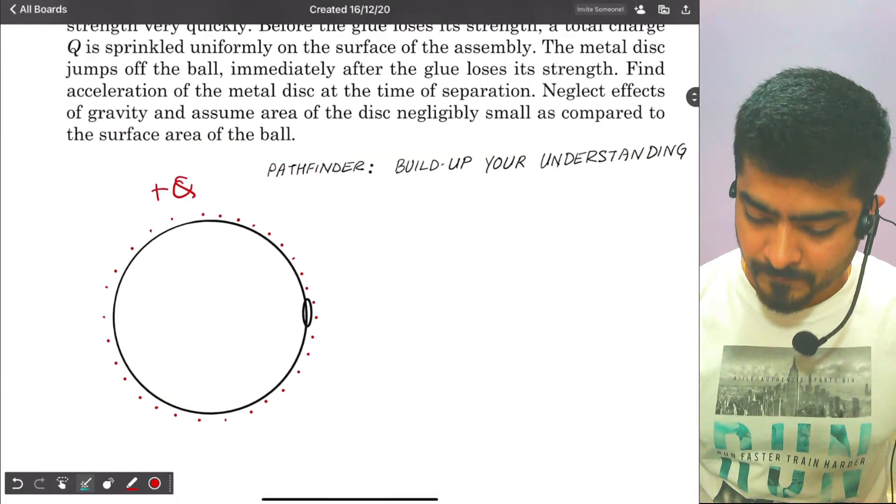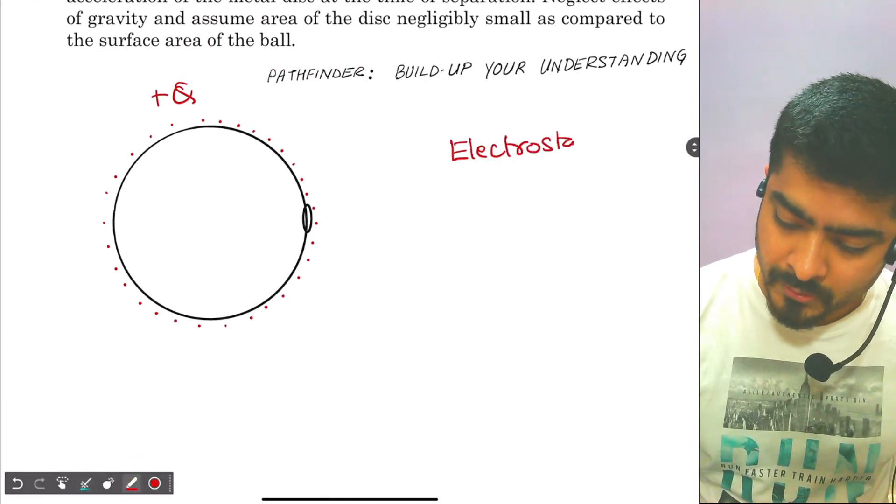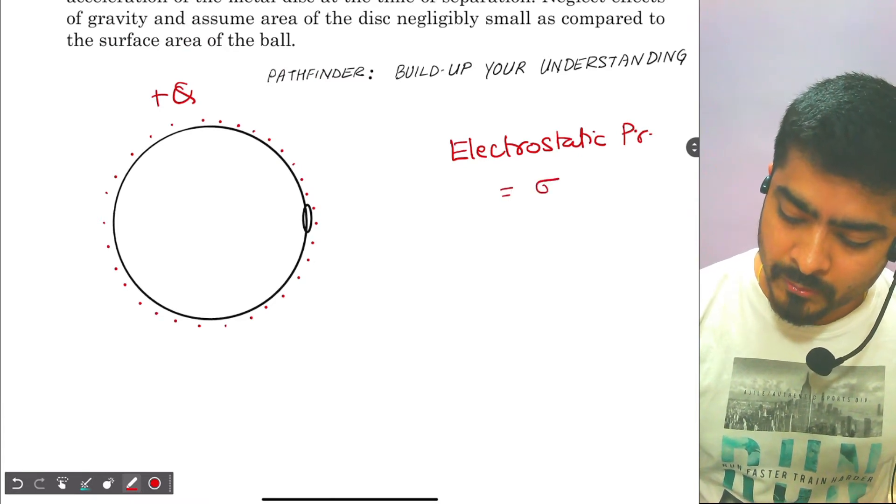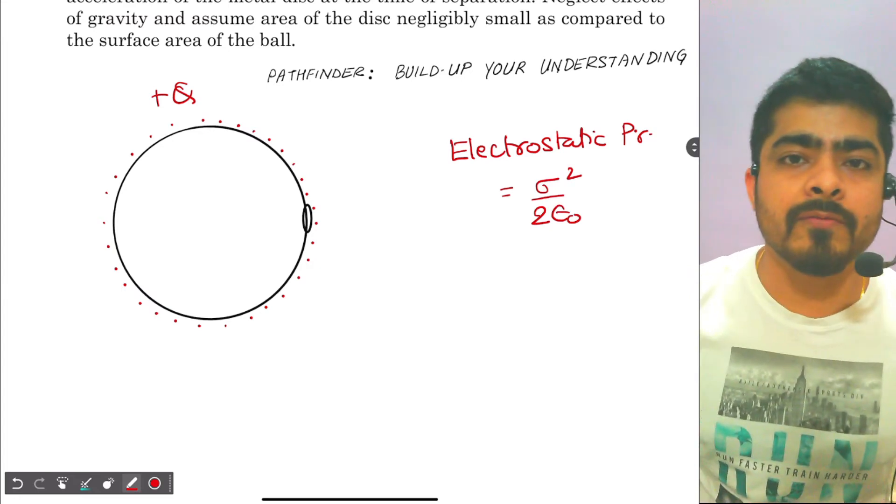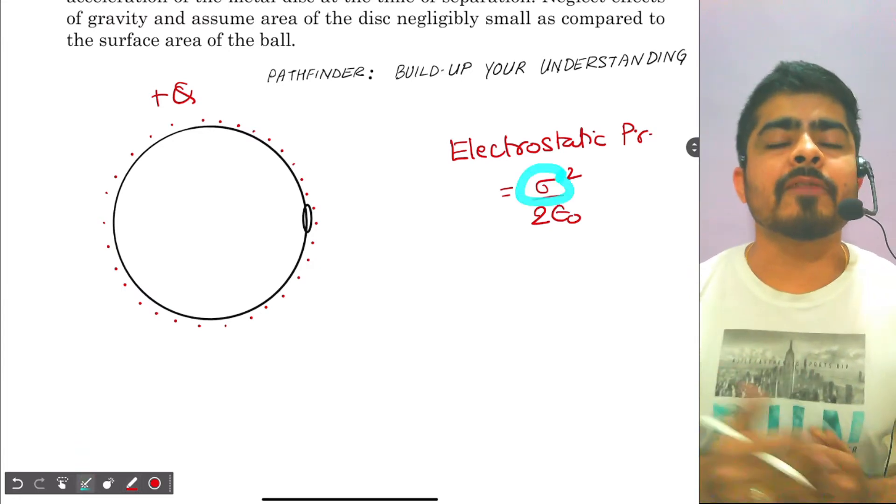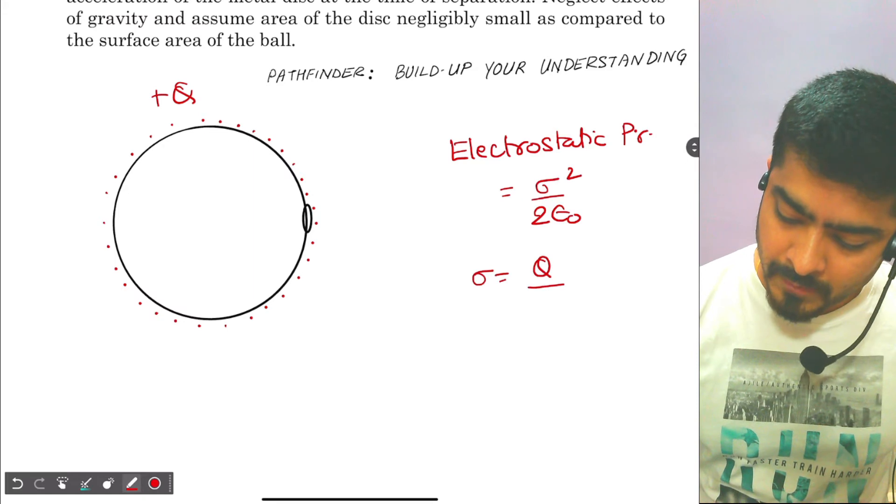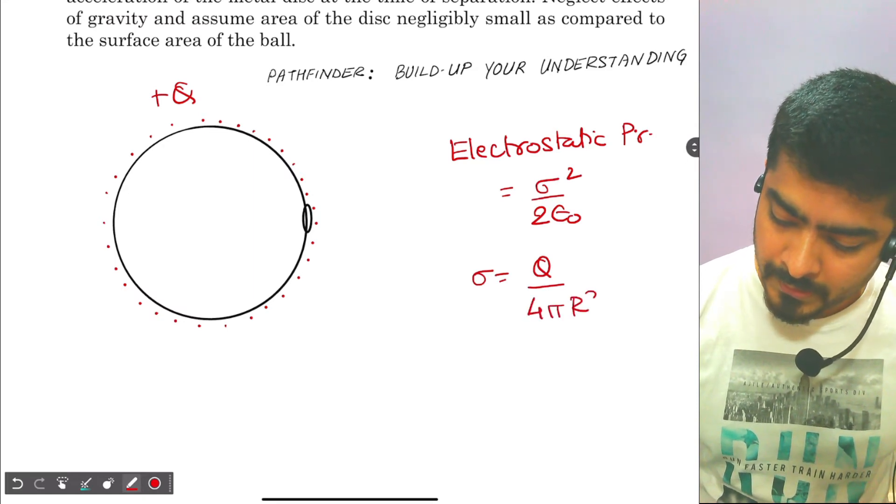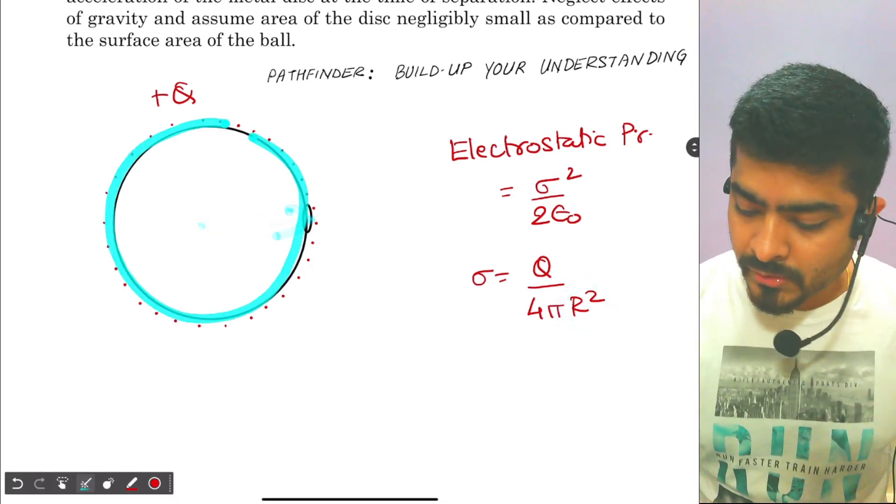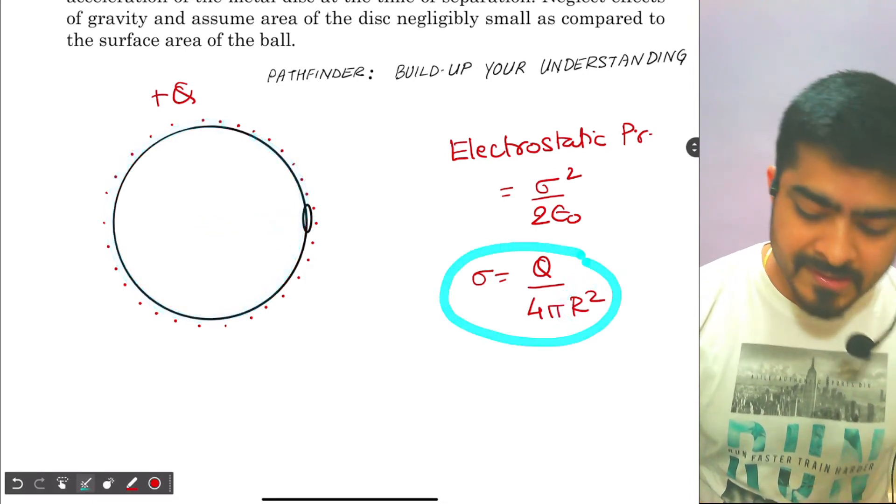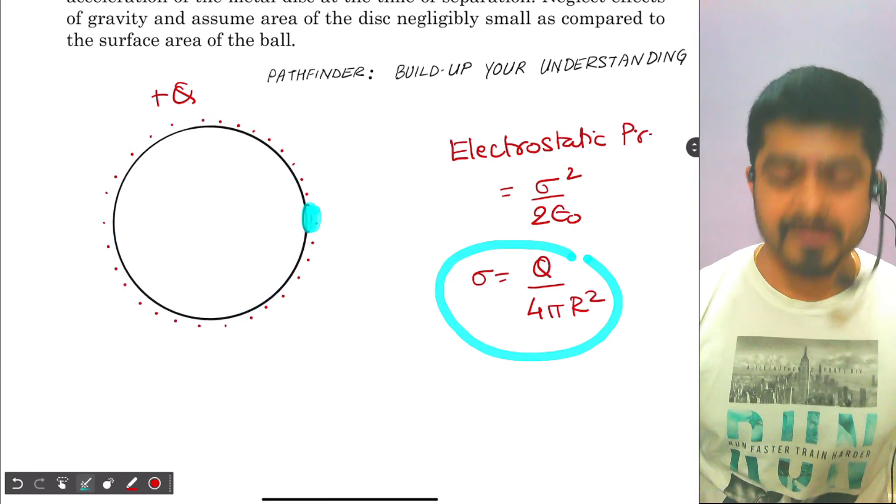Now how do we solve this question? We know something called electrostatic pressure, which is equal to sigma square by 2 epsilon naught. This is the formula for electrostatic pressure, where sigma is the surface charge density. So sigma in this case will be equal to Q by 4 pi r square, where r is the radius of the entire sphere. The charge is distributed with this density on the entire surface. That means the disc also has charge of the same density.